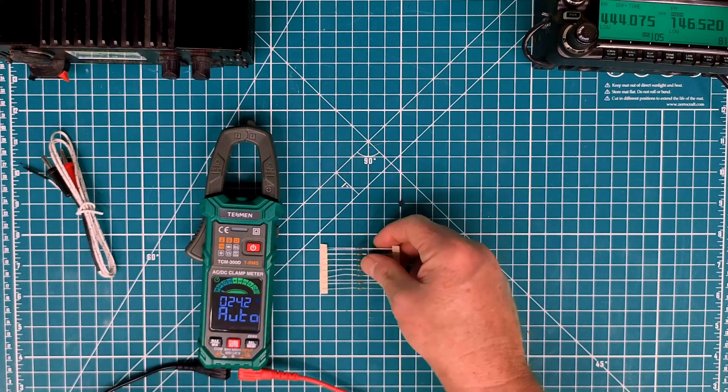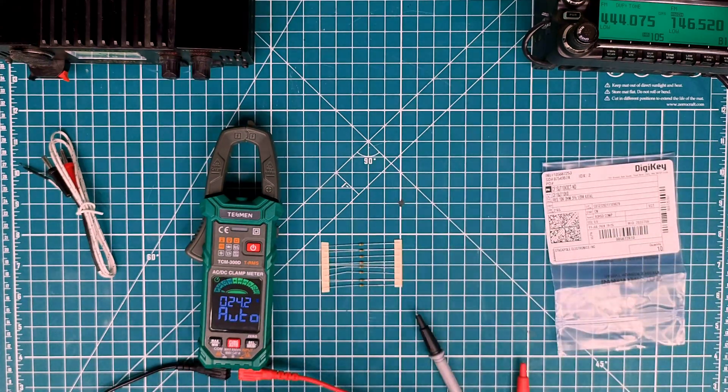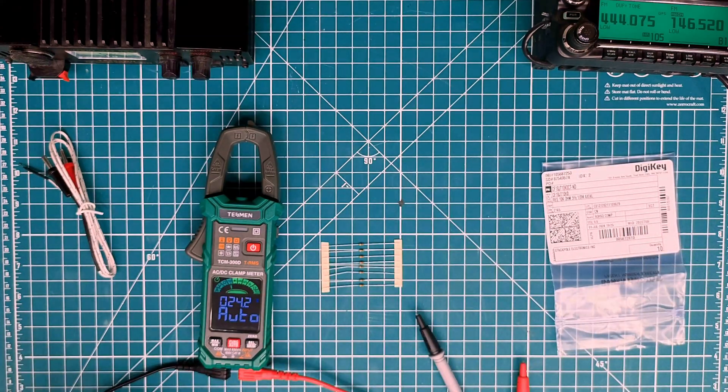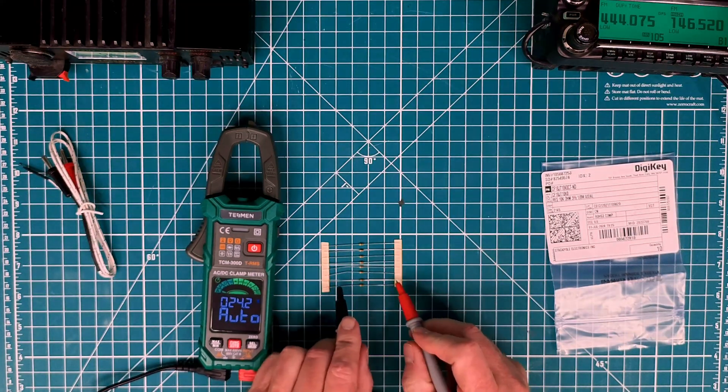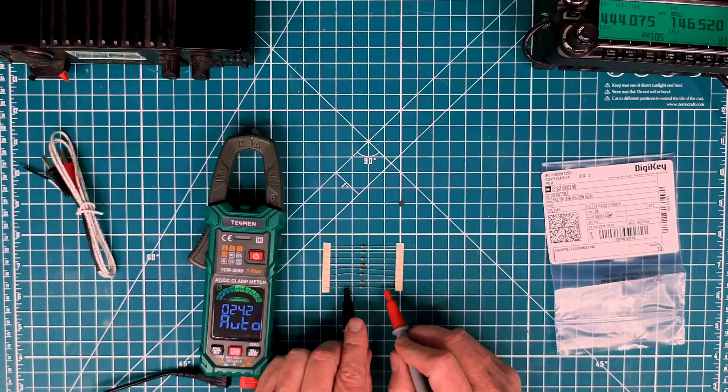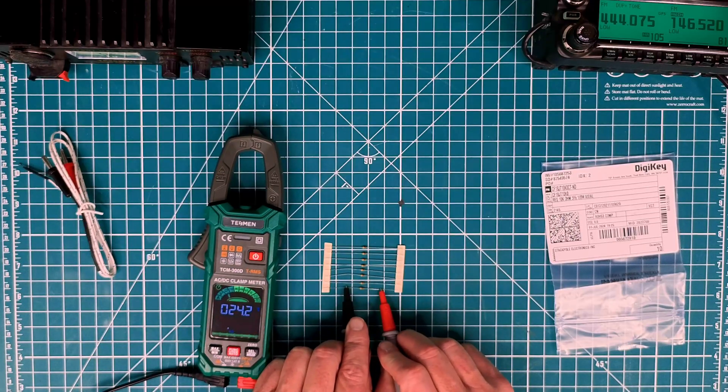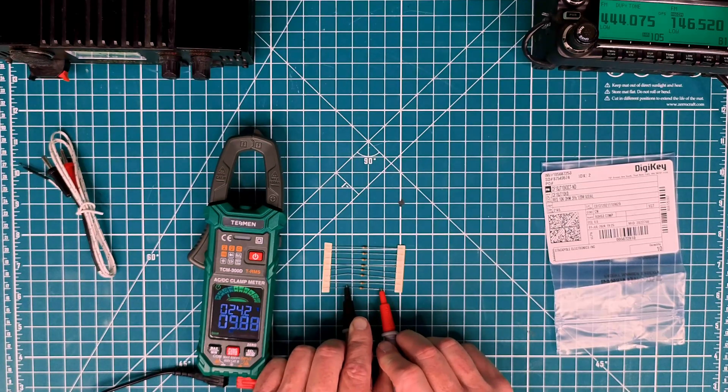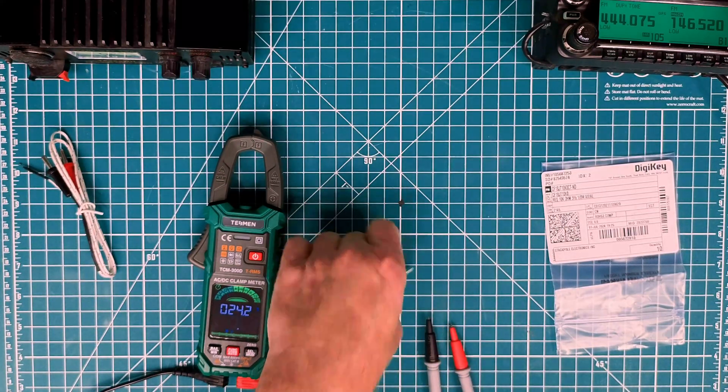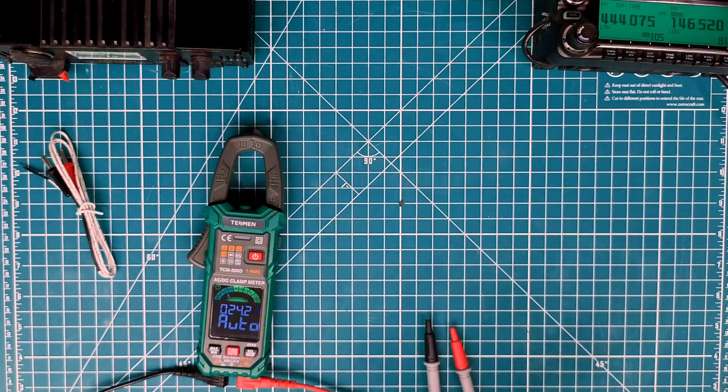So these are some 10,000 or 10K resistors. And if we measure across them, we'll see it's 9.8K. So once again, still within that margin of tolerance.